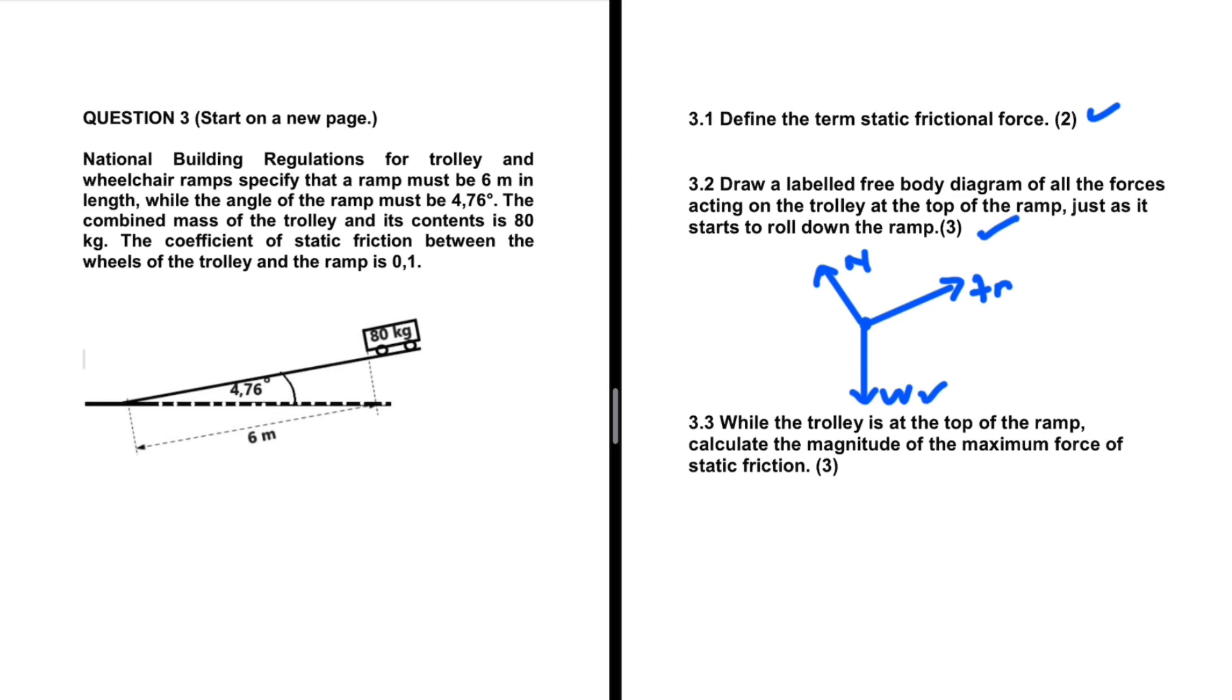And 3.3, while the trolley is at the top of the ramp, calculate the magnitude of the maximum force of static friction. So if we want frictional force, we take the coefficient and multiply it by the normal force. The coefficient is 0.1, it is given to us in the question statement. Here it is. So we just need to calculate the normal force. In an inclined surface, the normal force is mg cos of theta. So the frictional force will be the coefficient multiplied by mg cos of theta.